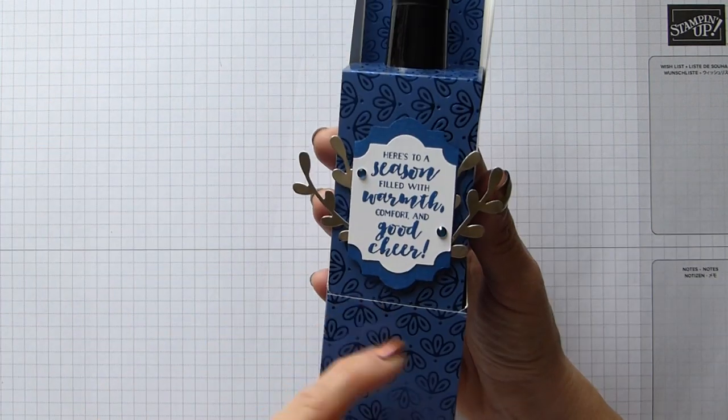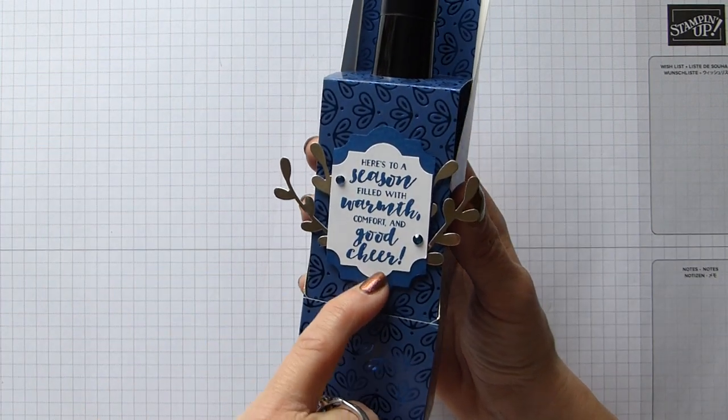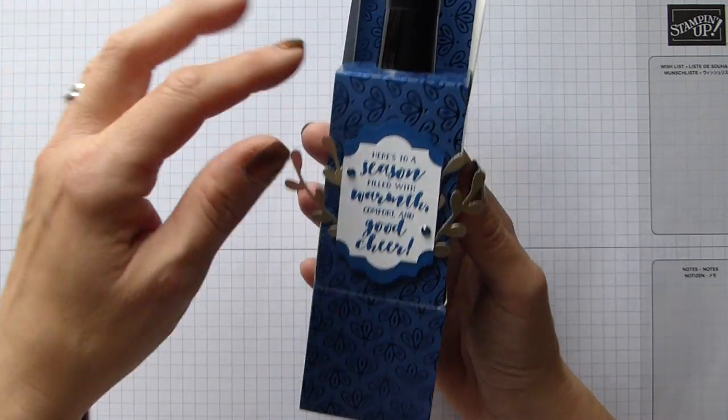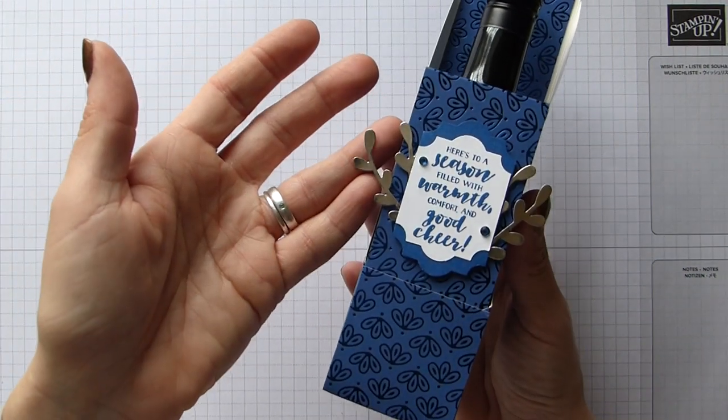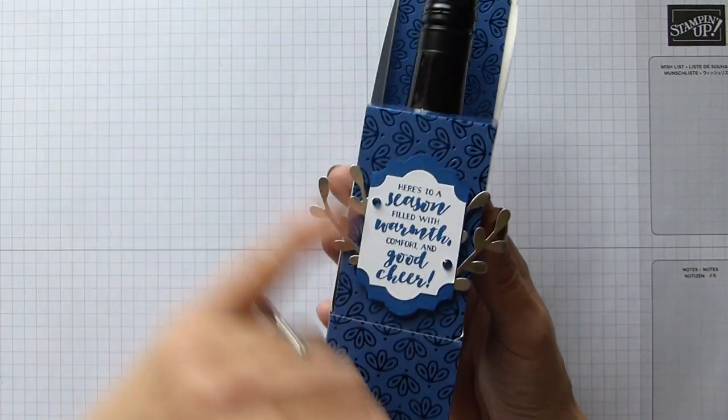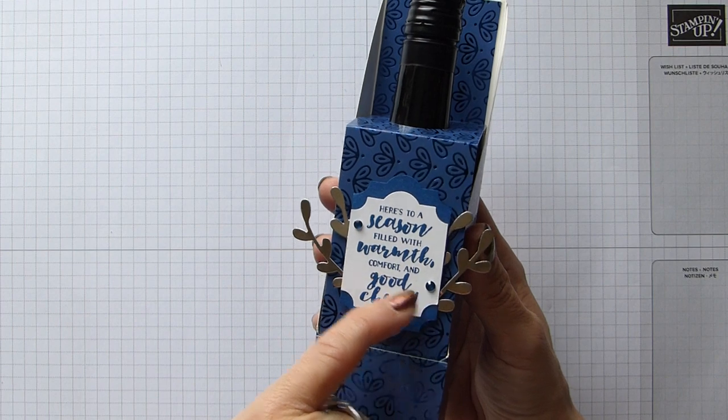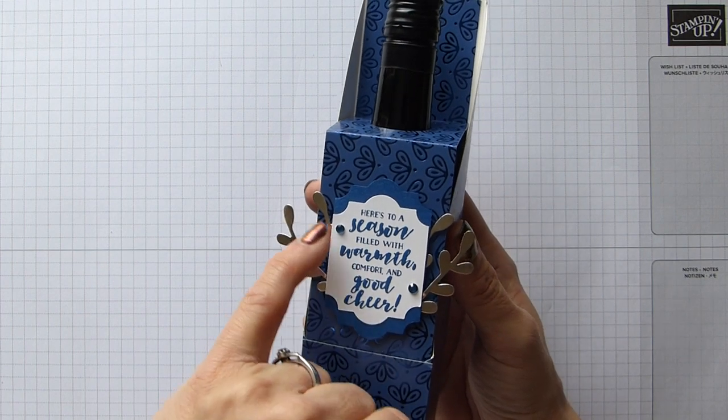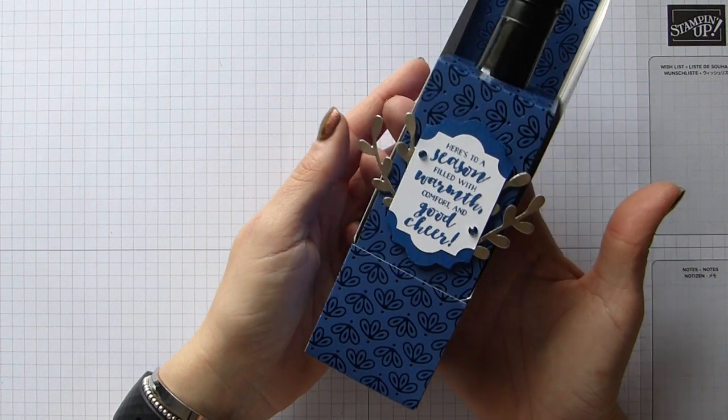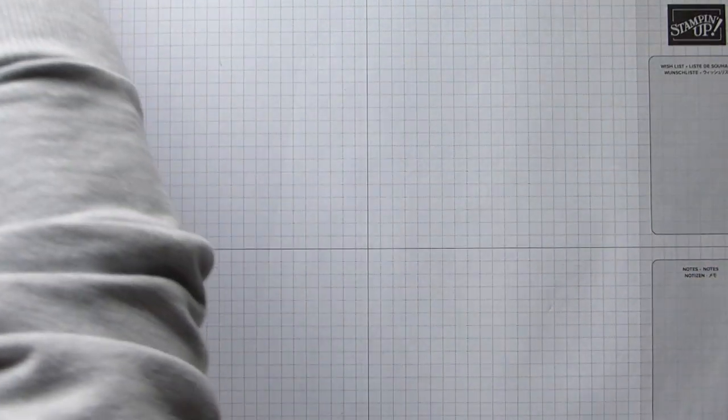As you can see I've used this fabulous sentiment which made me laugh when I saw good chia, and I thought that makes me think of cheers and drinking wine, so that's why I chose that one. A couple of beautiful little sprigs on the side here. I've used noble peacock rhinestones but you can use the holiday ones or whatever you want.